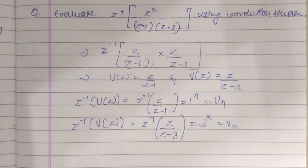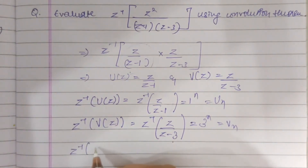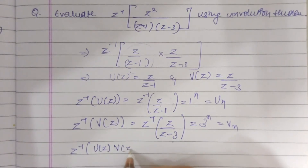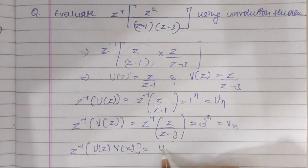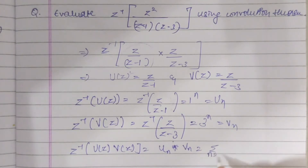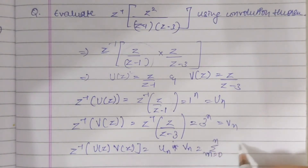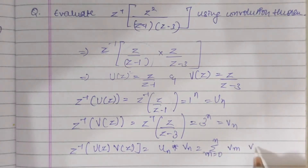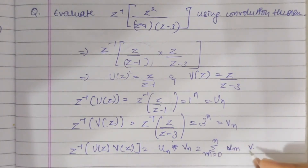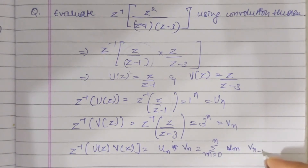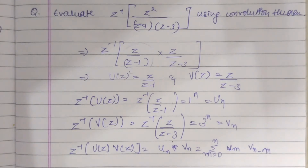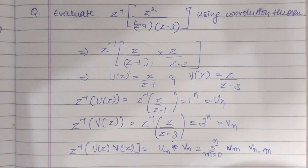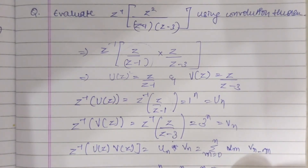So now Z⁻¹ of U(z)·V(z) is equal to u(n) * v(n), which equals the summation from m=0 to n of u(m)·v(n−m). Substituting, that equals the summation from m=0 to n of 1ᵐ · 3^(n−m).